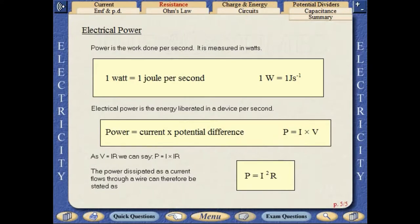Power is the work done per second. It is measured in watts. Electrical power is the energy liberated in a device each second. The power dissipated as a current flows through a wire can therefore be stated as P equals I squared R.